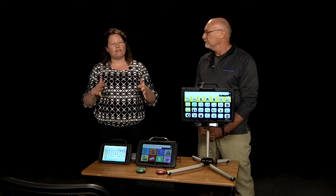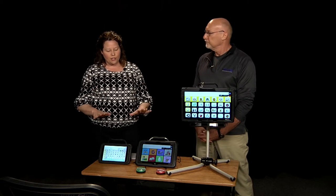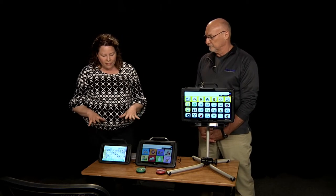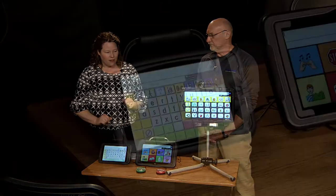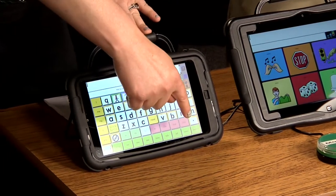Let's go ahead and get started. Today I really want to focus on the flexibility of PRC systems. So I want to share with you a little bit about our current line. This is the Accent line of communication devices. The Accent 800 is an eight inch screen.